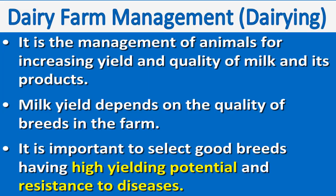Our next topic is management of farm and farm animals. Under this topic, first we will discuss about dairy farm management. Dairy farm management is the management of animals for increasing yield and quality of milk and its products. Here, management of animals is done for increasing the milk yield and to improve the quality of milk and its products. Milk yield depends on the quality of breeds in the farm, which is the most important thing about dairy farm management.